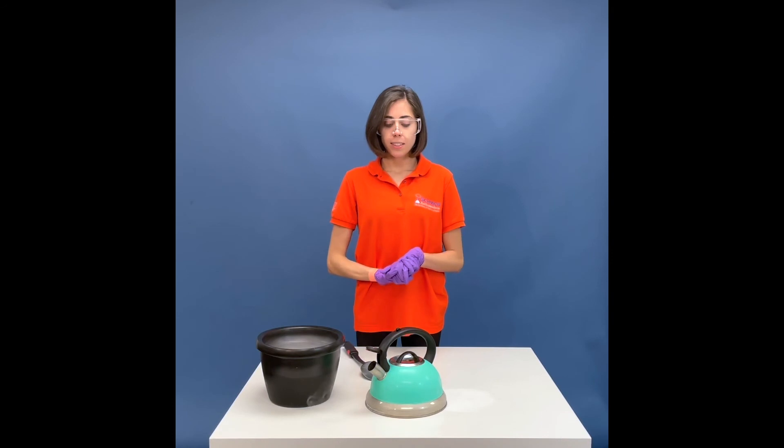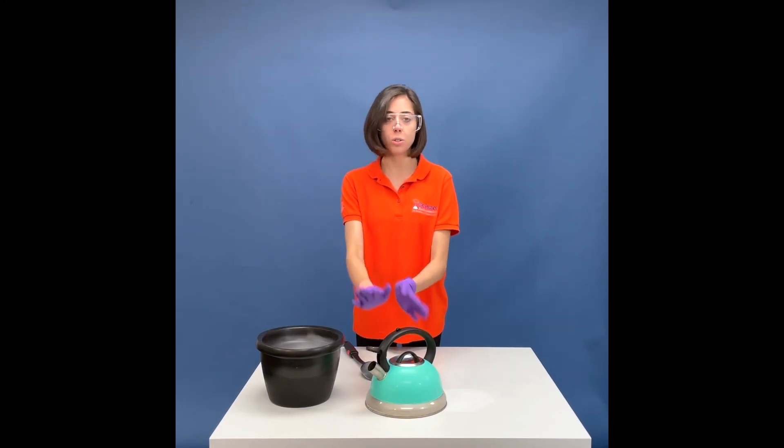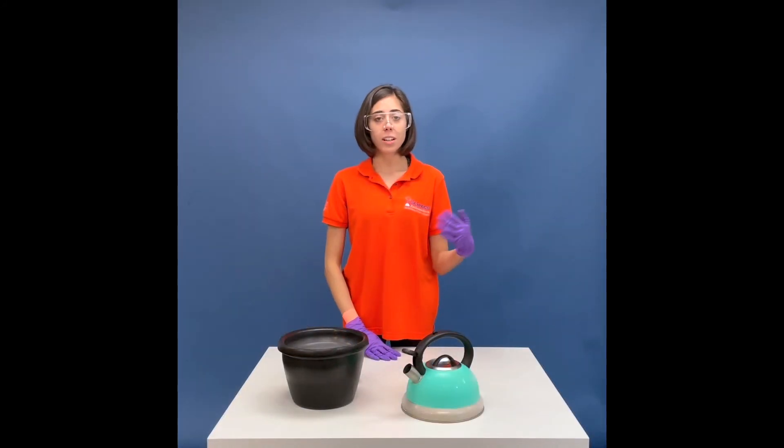And even though they are completely different spectrums of hot and cold, the boiling creates pressure just like it did here and creates a whistling sound. Now you can't use liquid nitrogen for tea, but you can use it to make a teapot whistle.